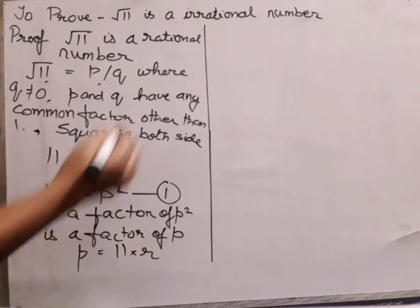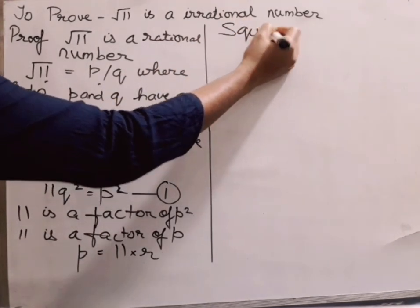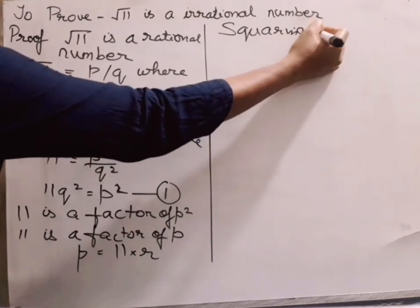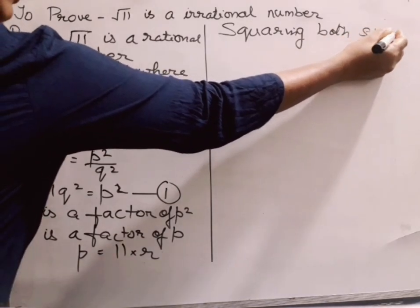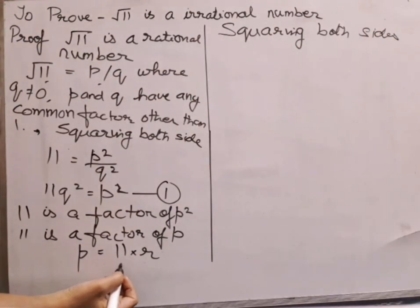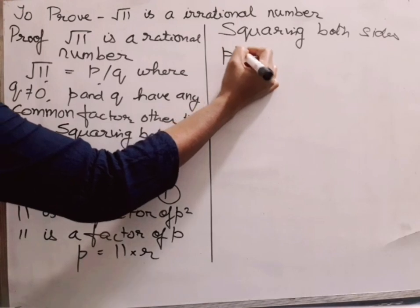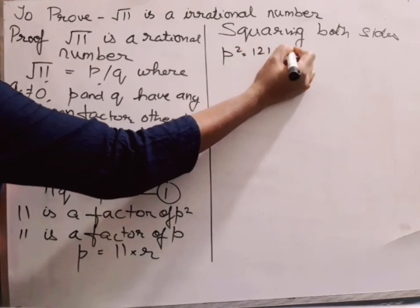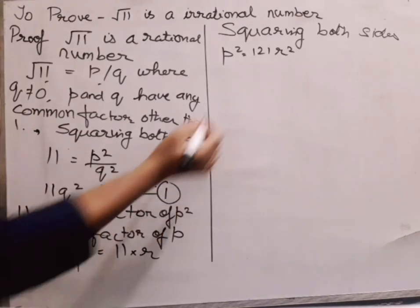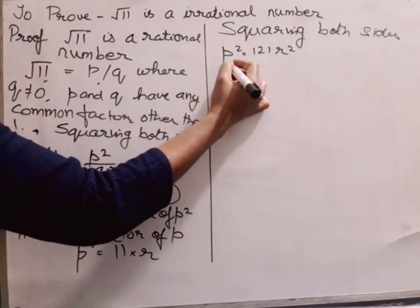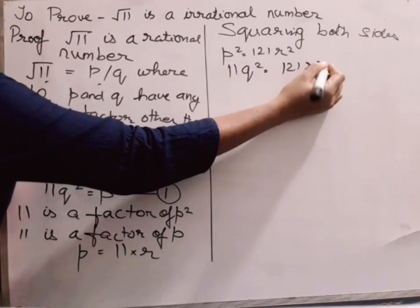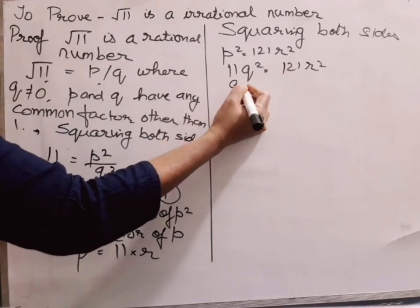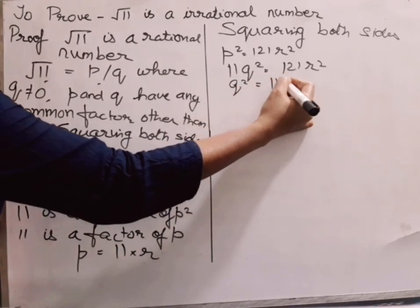Now I am squaring both sides of P = 11R. When I square both sides, P² = 121R². From equation 1, substituting in place of P², I can write 11Q² = 121R². Dividing both sides by 11, I get Q² = 11R².